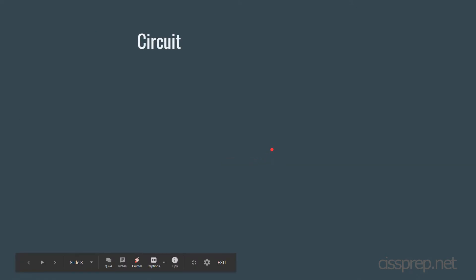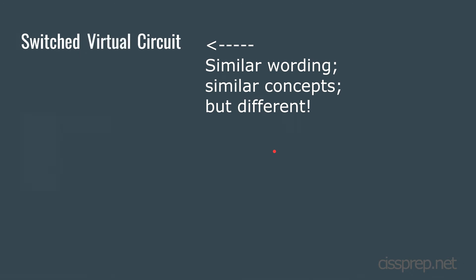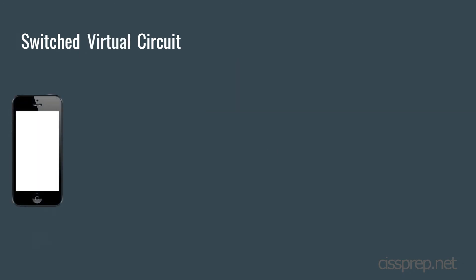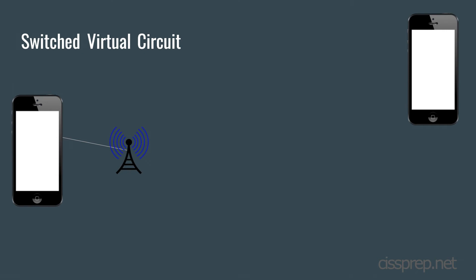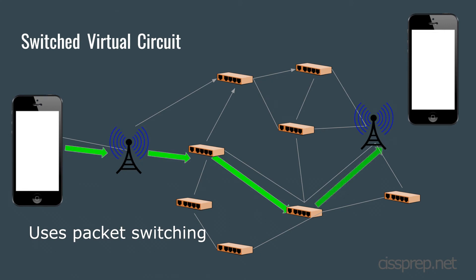With a switched virtual circuit, the idea is basically the same, but instead of sending the analog signal over the wire, voice is converted to digital data packets and they're sent for the duration of the call or the file transfer. Once the call is over, the circuit is terminated.